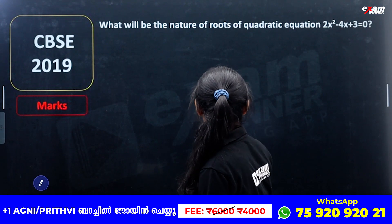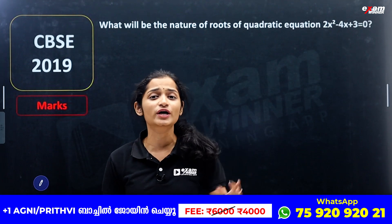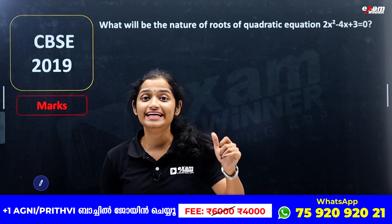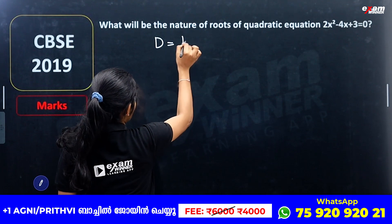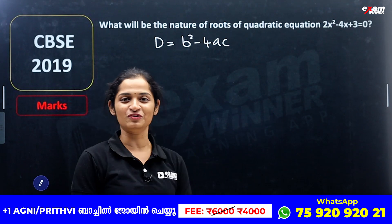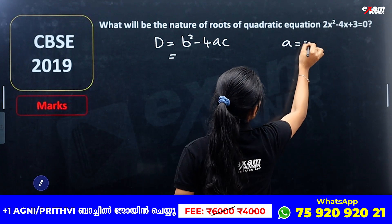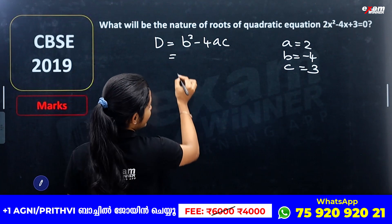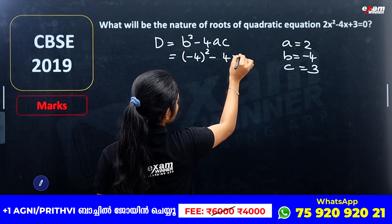What will be the nature of the roots of the quadratic equation 2x² - 4x + 3 = 0? So this is a quadratic equation. What is the nature of the roots? Discriminant D is equal to b² - 4ac. So we substitute: what is (-4)² minus 4 into 2 into 3?